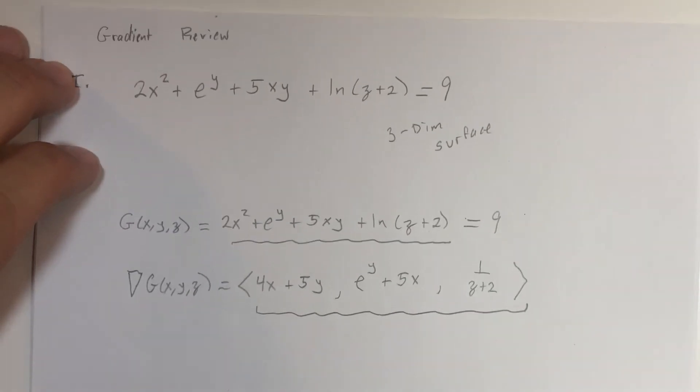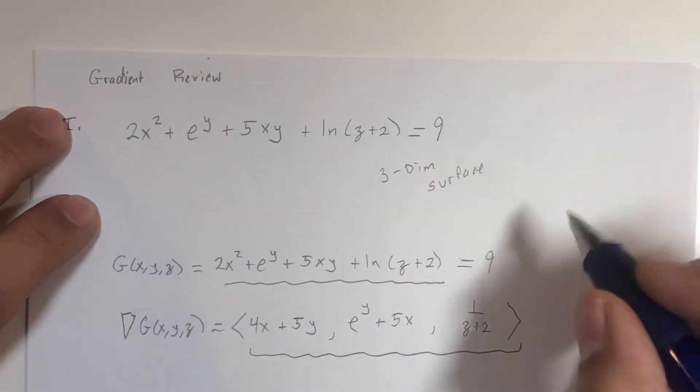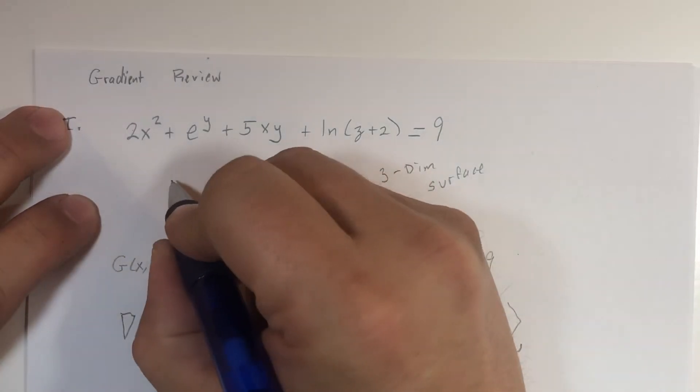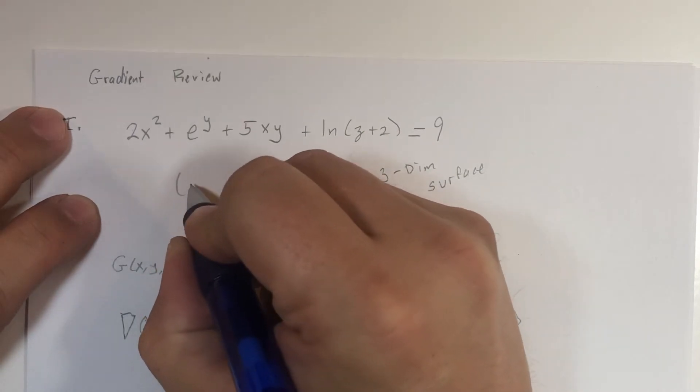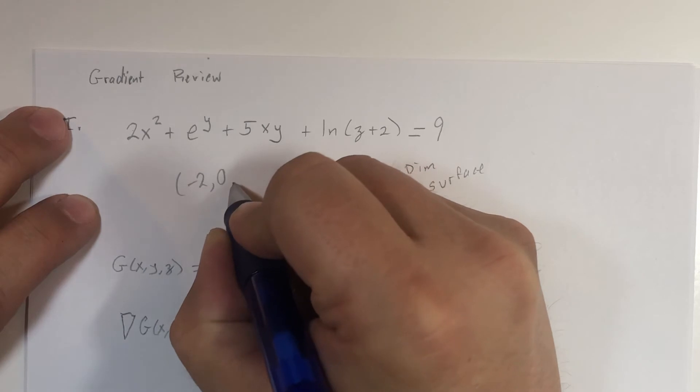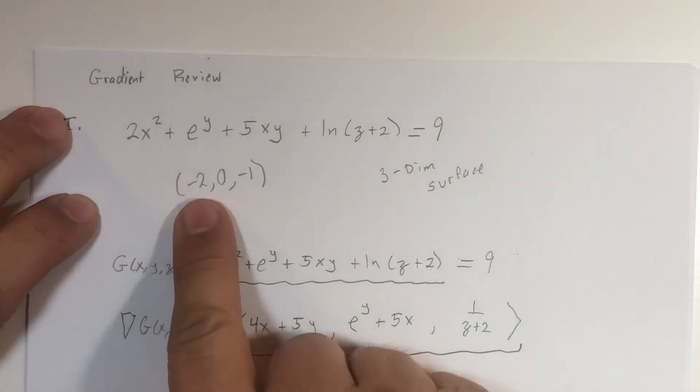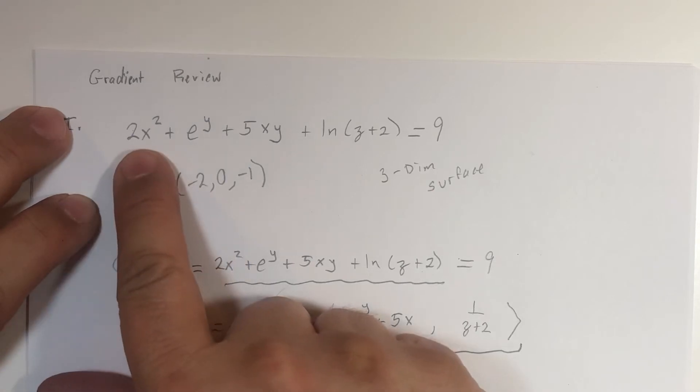Let's suppose I rewound the clock here and went back to our 3D surface. I gave you coordinates of a point that happens to fit this graph. Those coordinates would be (-2, 0, -1). If you let x be -2, this becomes 8.